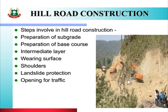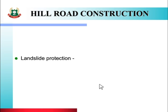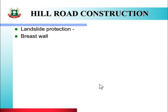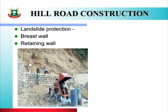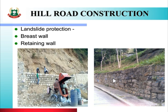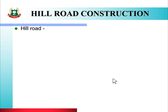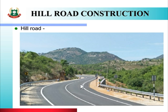In this picture, you can see the site clearance process during hill road construction. Next, we will see landslide protection work, which includes a breast wall. As you can see in this picture, this is the breast wall constructed in a hill road. The next protection measure is a retaining wall — see the picture of a retaining wall constructed in a hill road. In this way, the hill road is constructed using safety measures and opened for traffic. Here is a picture of a completed hill road constructed using safety measures.